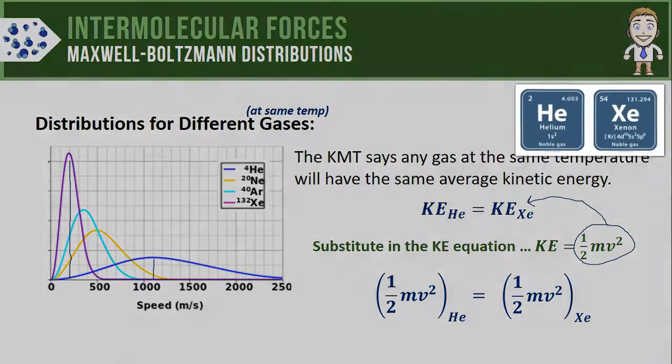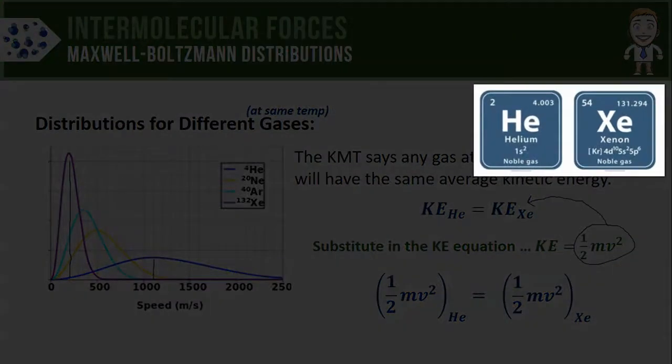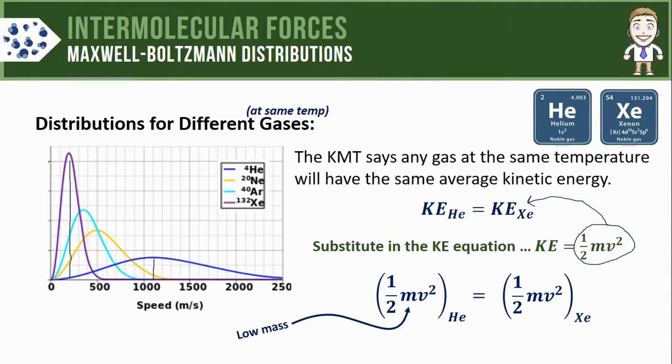First, in terms of mass, from the periodic table I can see that helium particles are much lighter and xenon particles are much heavier. So there's going to be a very low mass or a small number over here and a very high mass or a big number over here. Now let's think about how the velocities are going to compare.